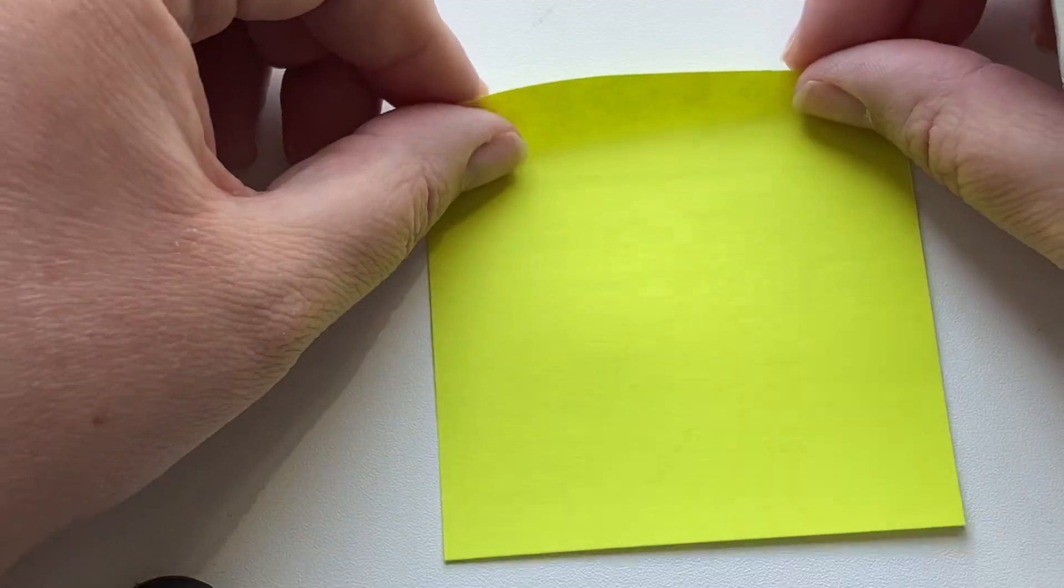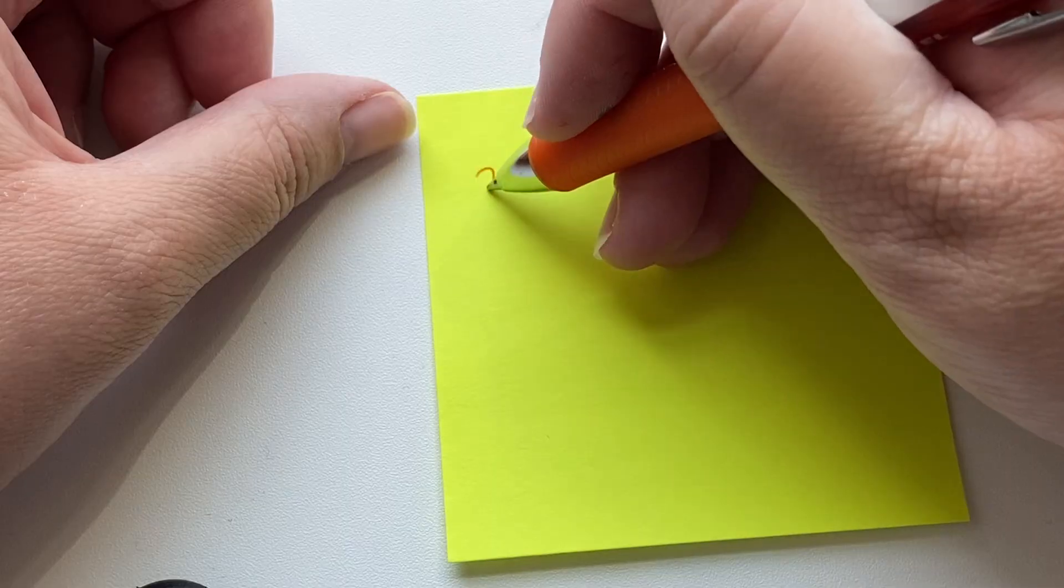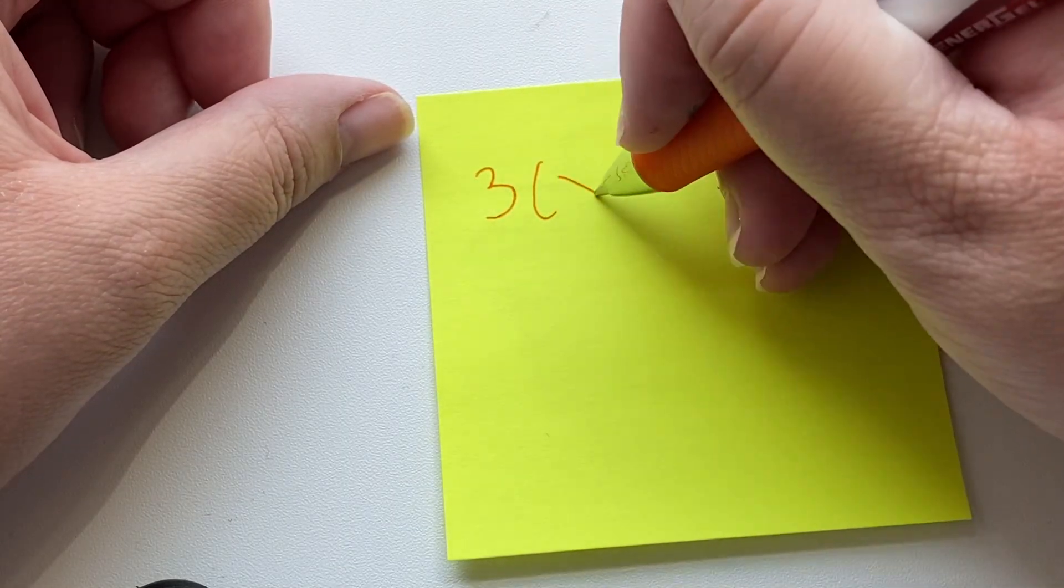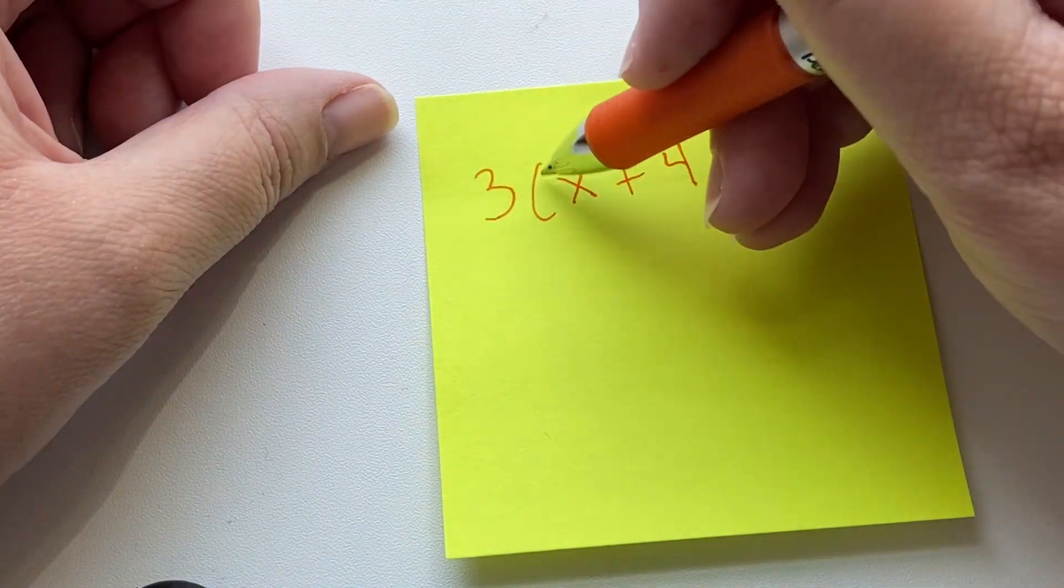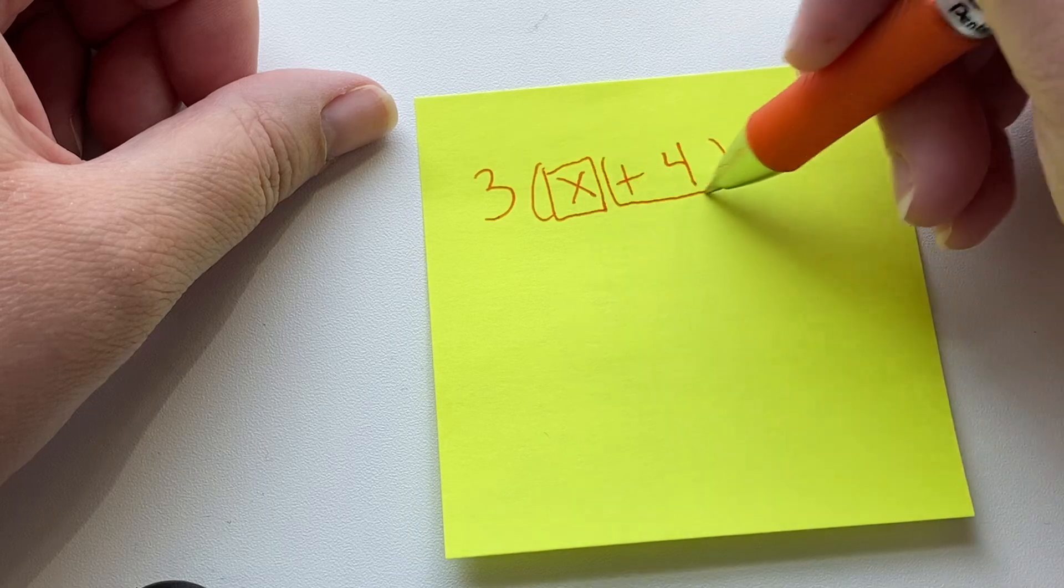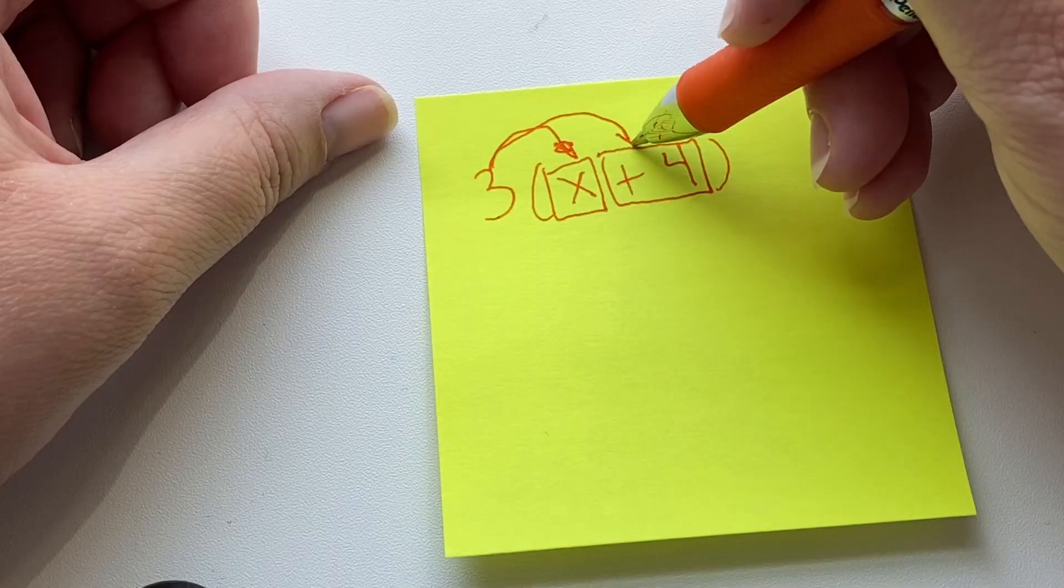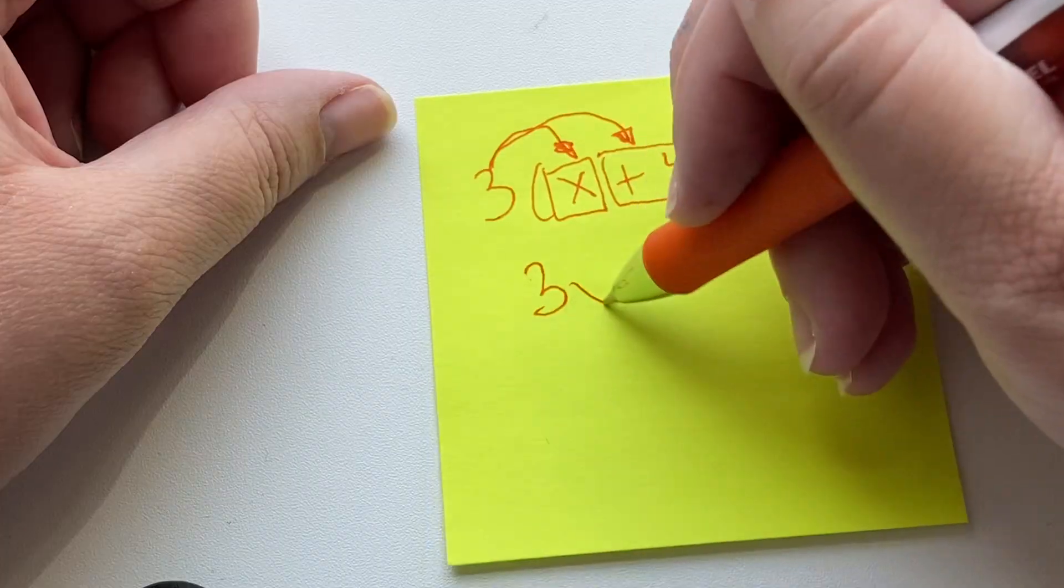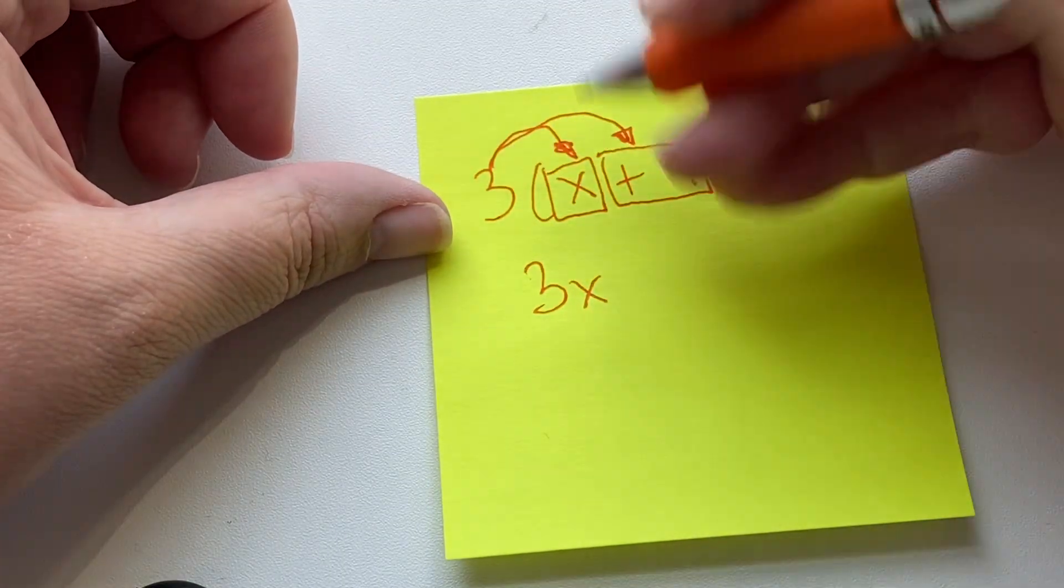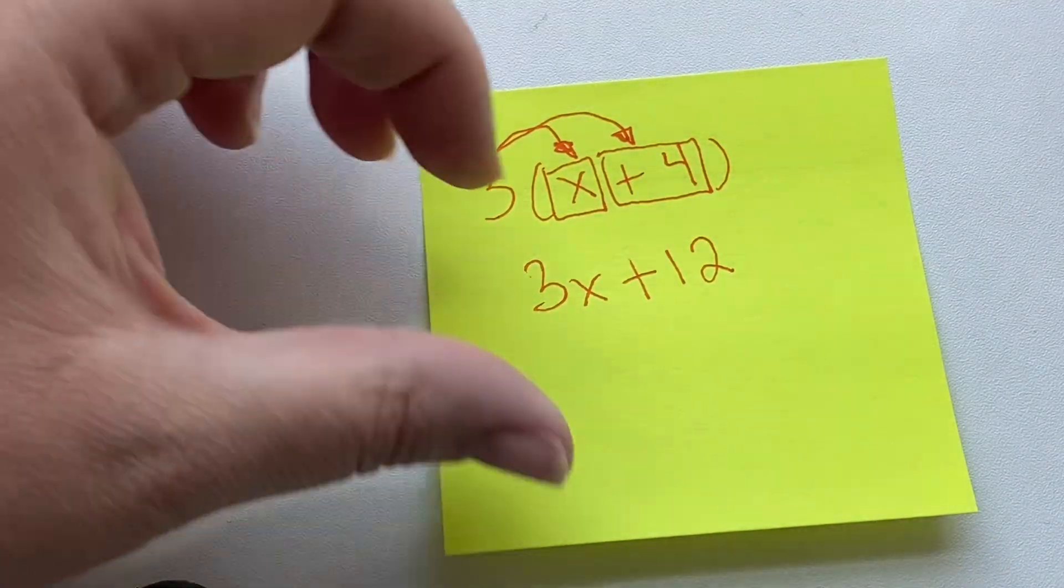We're going to just think back to what we were working on yesterday, which was that when you have parentheses and an expression, you have to multiply this number on the outside times all of the terms on the inside. So, 3 x's is 3x, and 3 times 4 is 12. That's what we talked about yesterday.